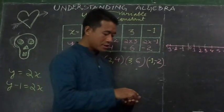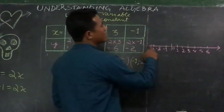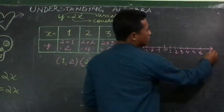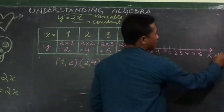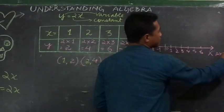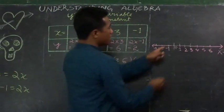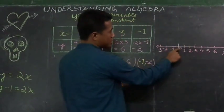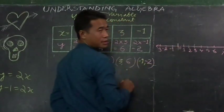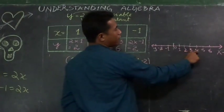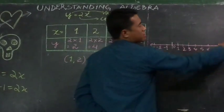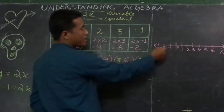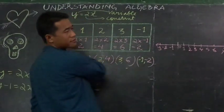First, we have a line here. This line is the x-axis. We have 0 here, then 1, 2, 3, 4, 5, 6, 7, 8, 9, 10 on one side, and minus 1, minus 2, minus 3, minus 4, minus 5 on the other side.